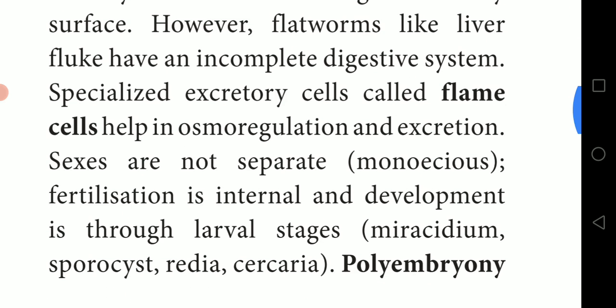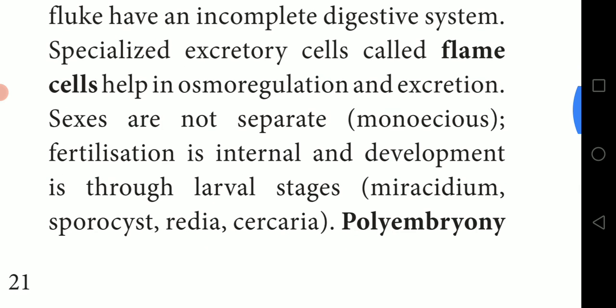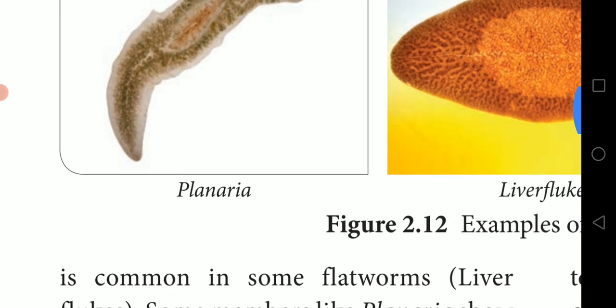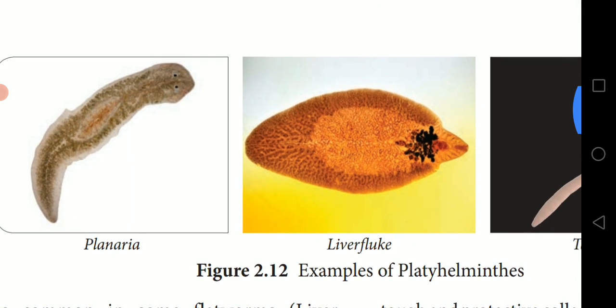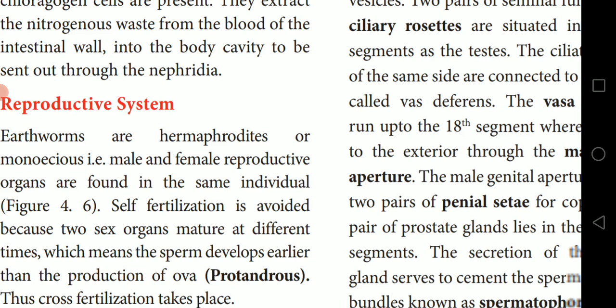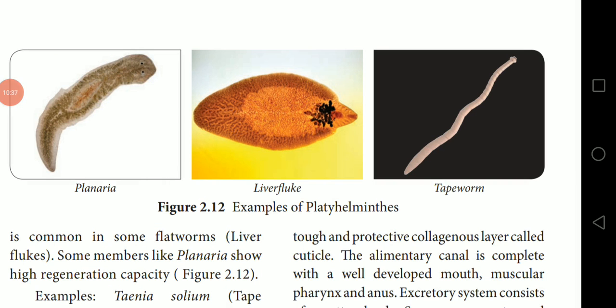Sexes are not separate — they are monoecious. Fertilization is internal and development is through larval stages: miracidium, then sporocyst, redia, and cercaria. These are the larval stages of Platyhelminthes. There is also a phenomenon called polyembryony. Examples include Planaria, liver fluke, and tapeworm.